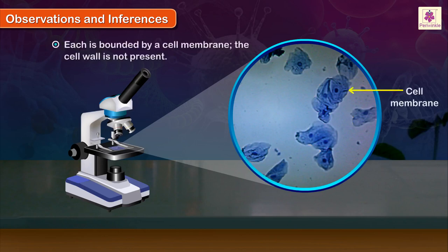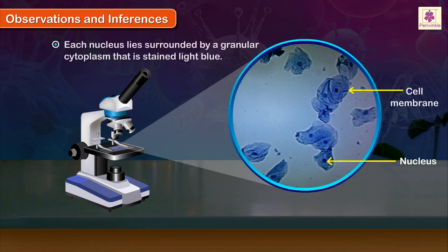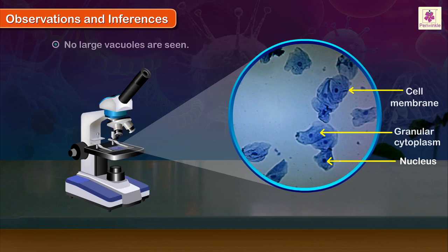Each is bounded by a cell membrane. The cell wall is not present. Each cell has a spherical nucleus, stained dark blue in color. Each nucleus lies surrounded by a granular cytoplasm that is stained light blue. No large vacuoles are seen.